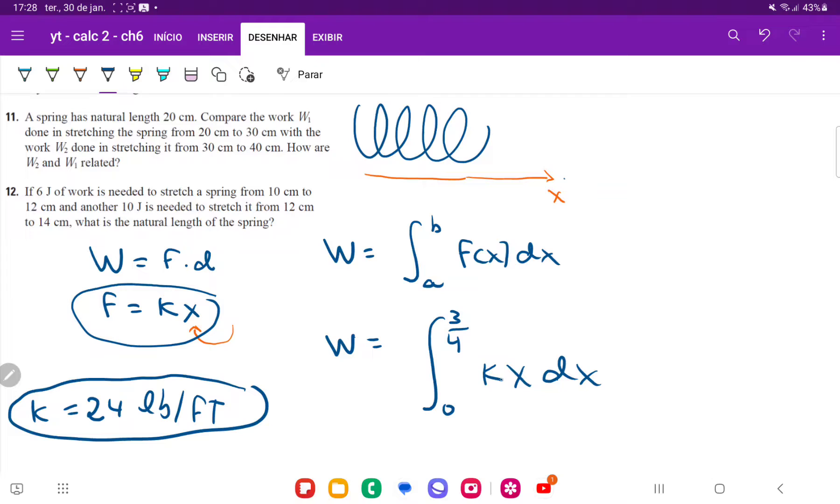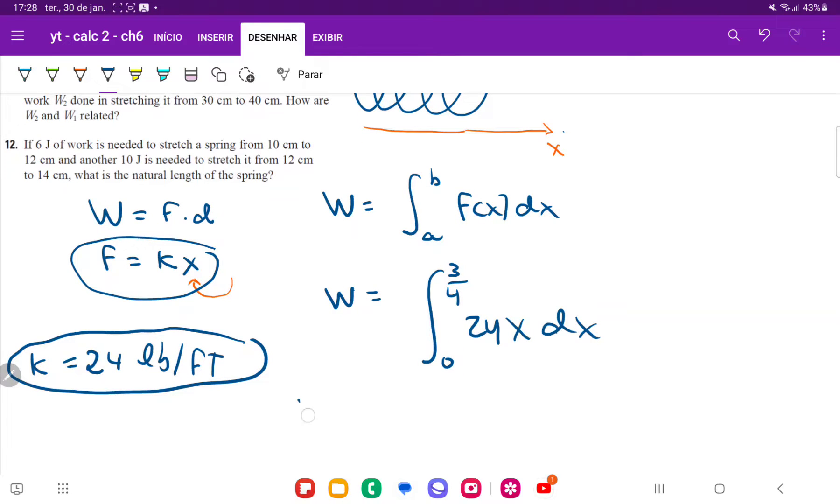But k, we already found it for this one, k is just 24. So this is the integral of 24x dx. And so if we calculate this, the work is going to be the integral of 24x is going to be 24 times x squared divided by two from zero to three quarters.